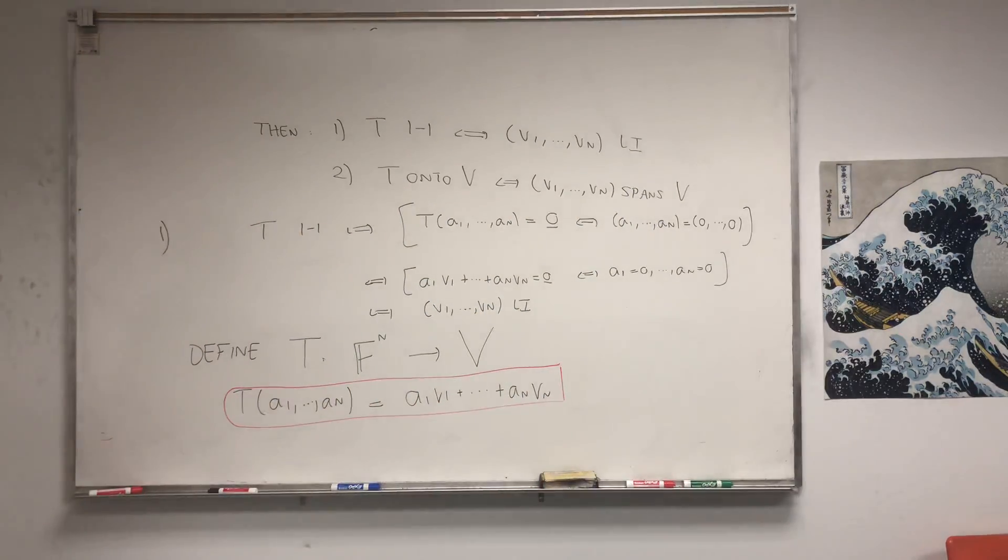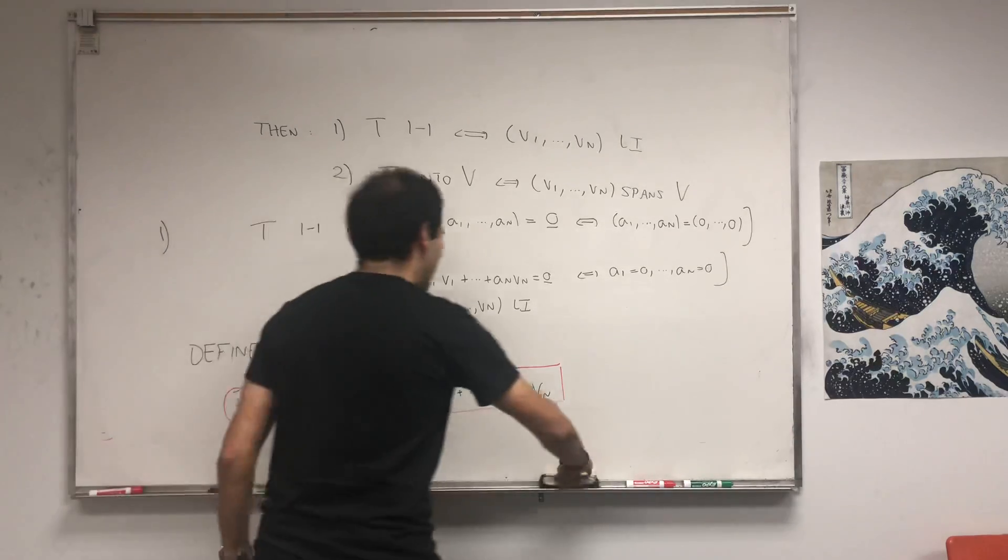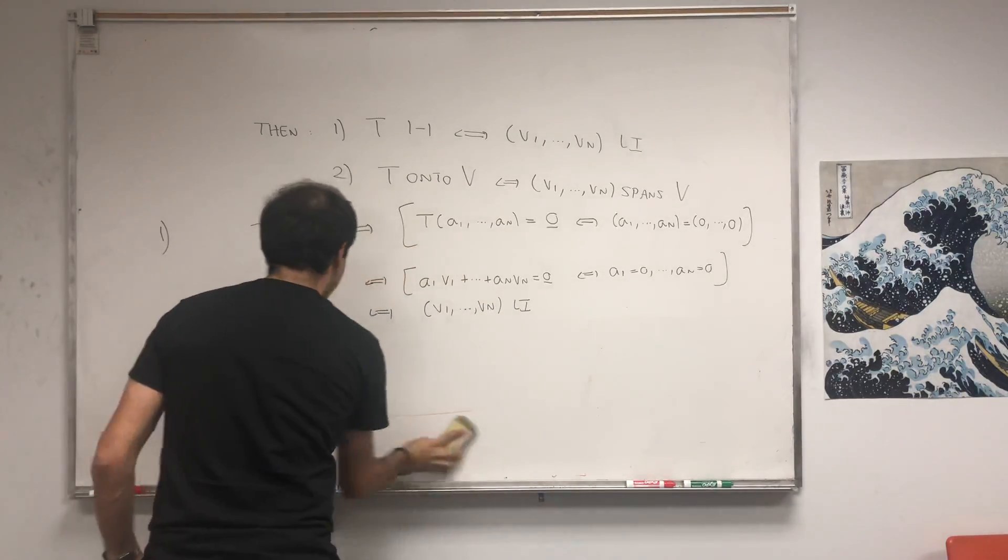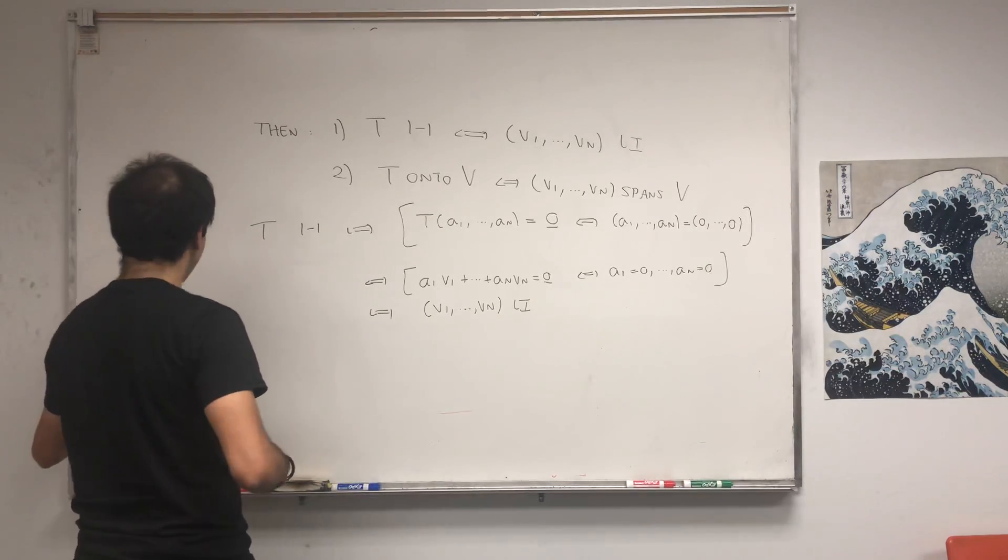So, how cool is that? So 1 to 1 is the same thing as linear independence. And in a completely analogous way, we can show that t is onto.